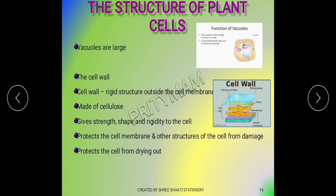The cell wall protects the cell membrane and other structures and organelles of the plant from damage. It also protects the cell from drying out.